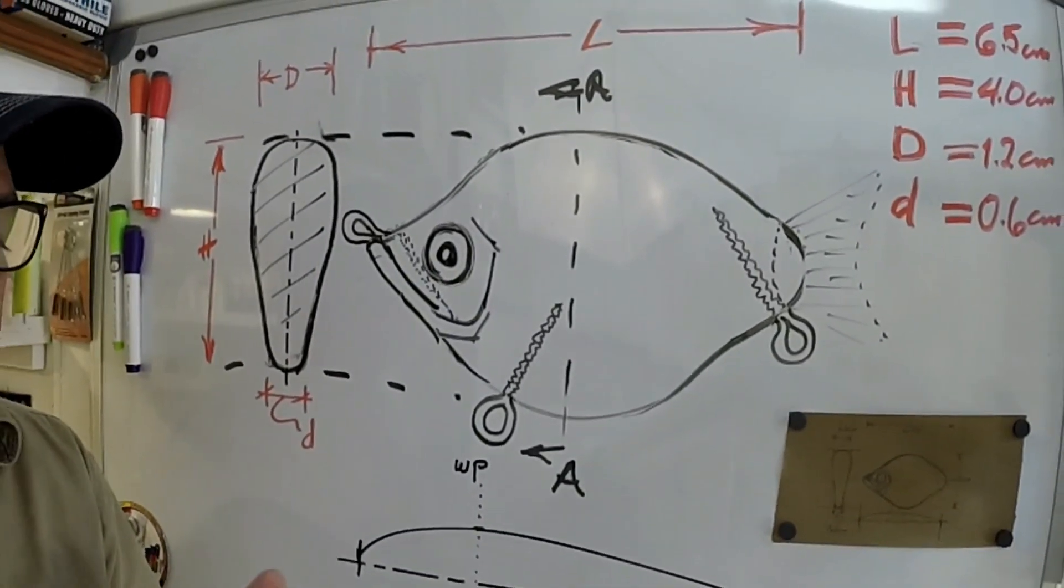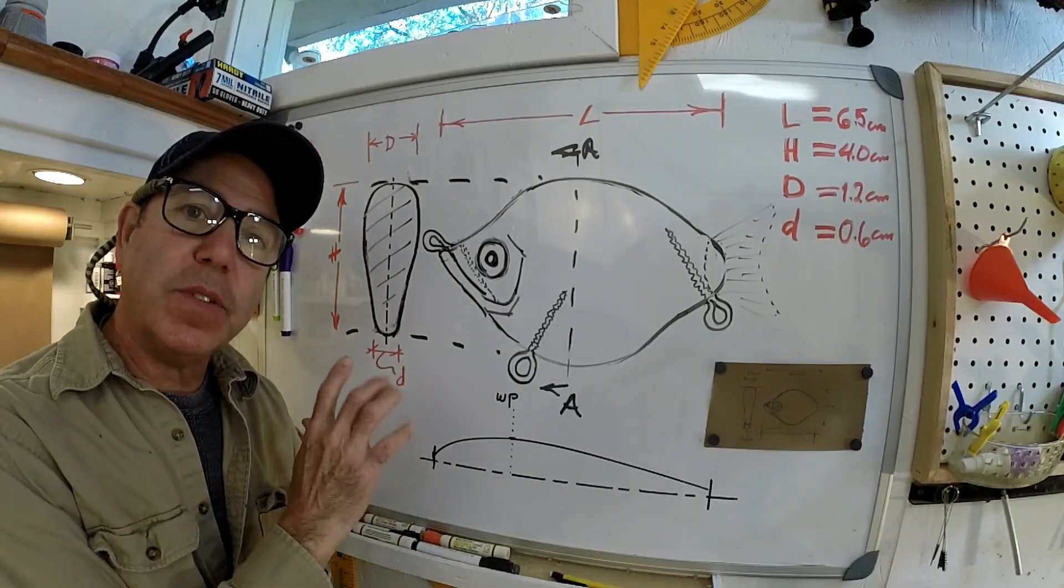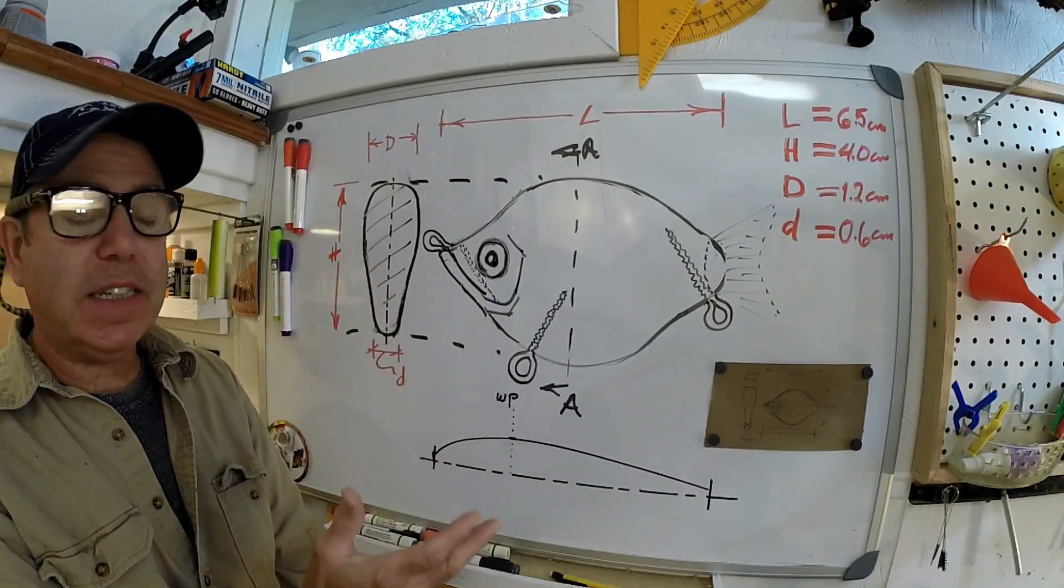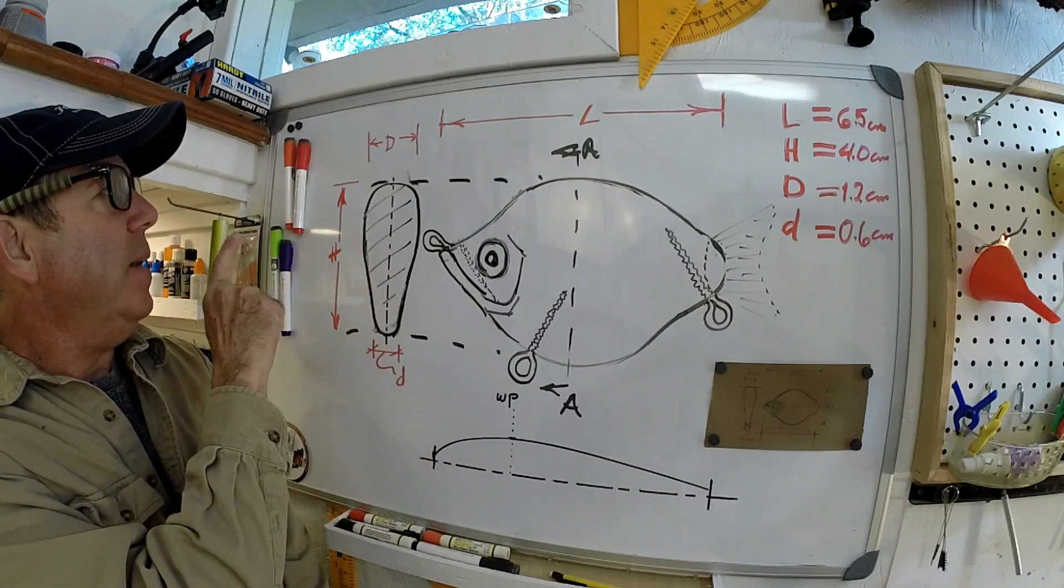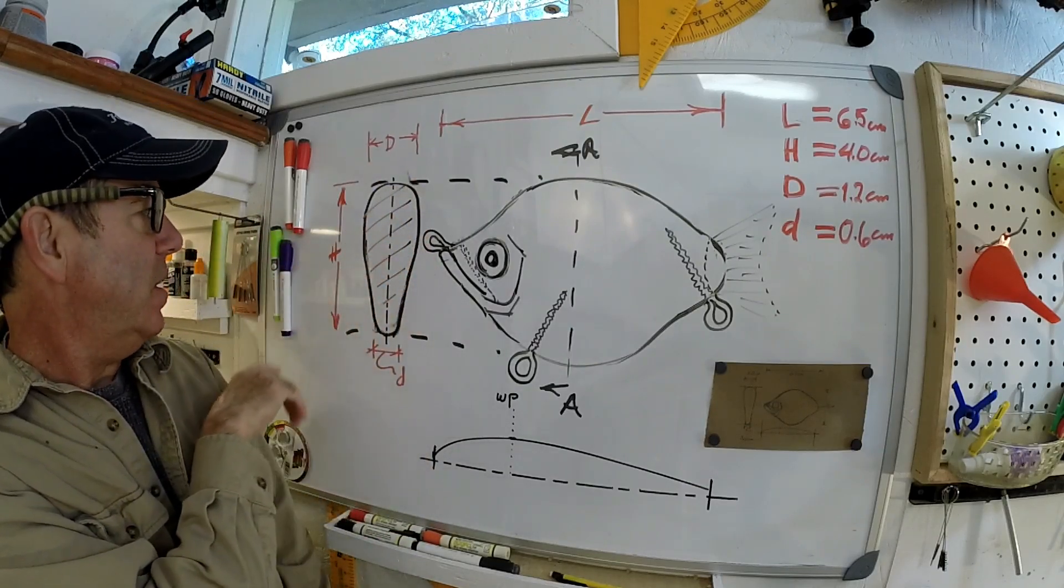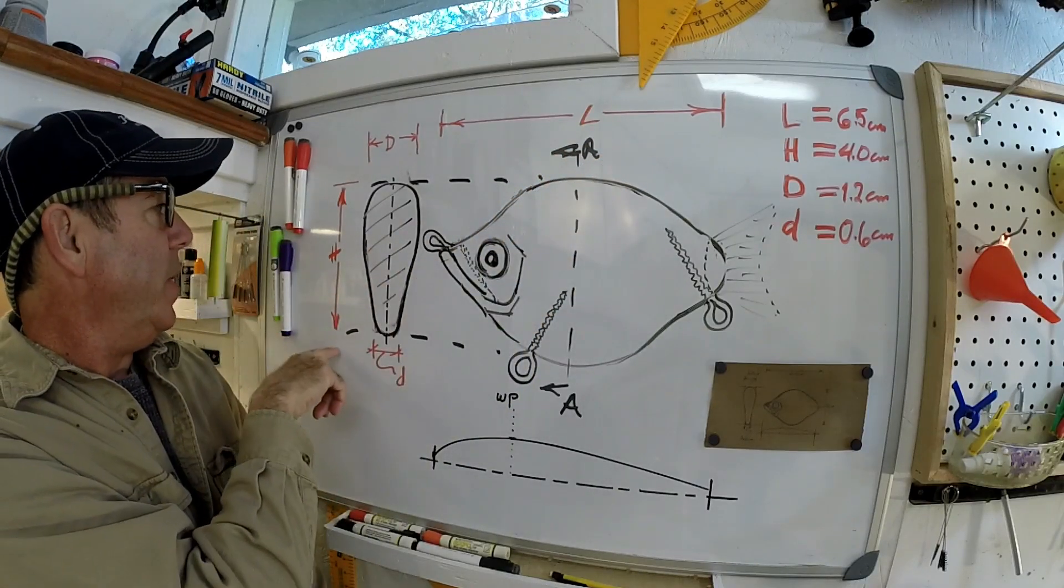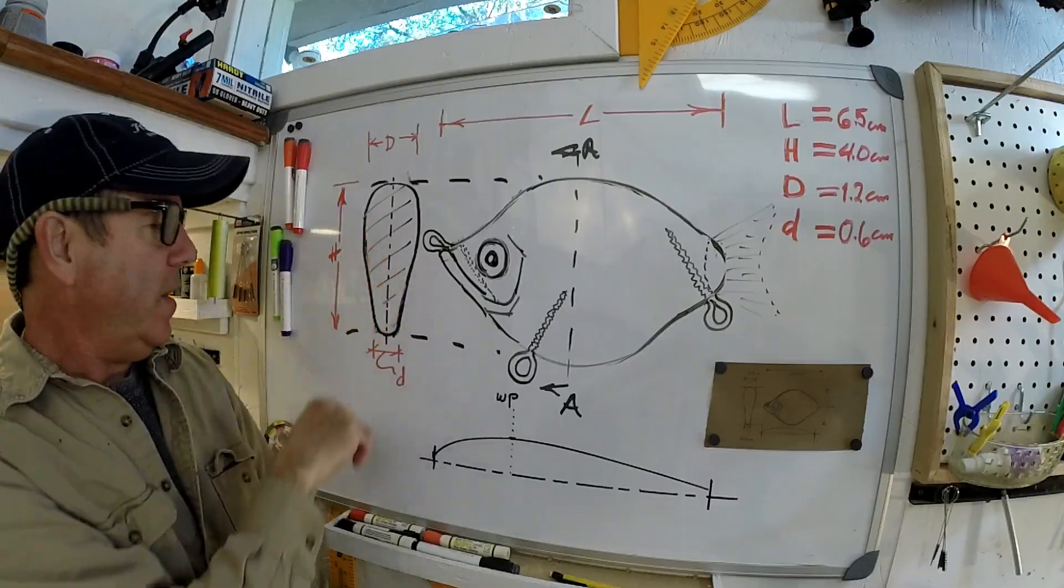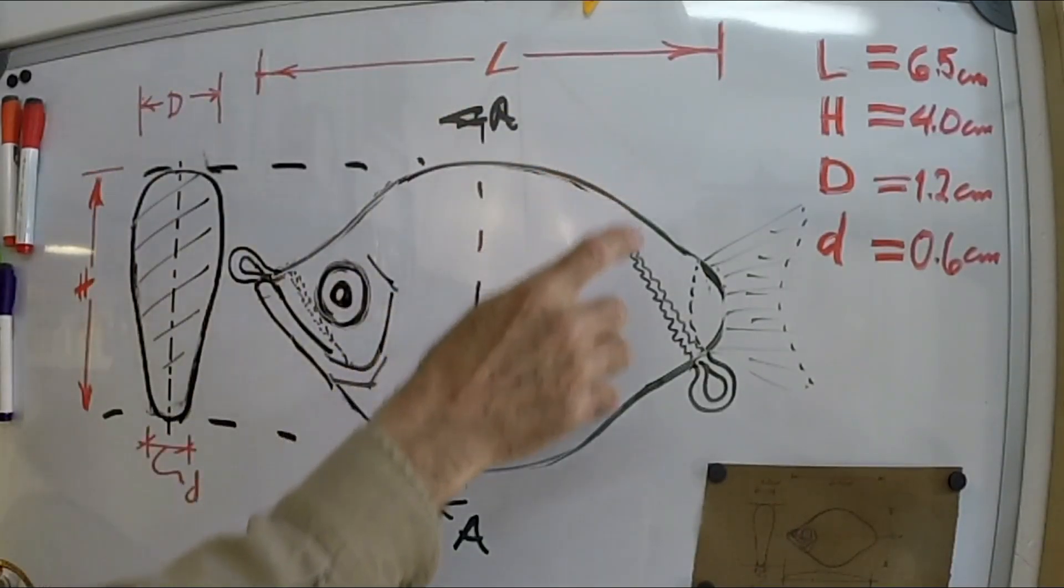Welcome back to the engineered angler. We're back still doing the lure design from scratch. This is the sketch that you remember from the last video. I've refined it a little bit and added dimensions. The dimensions are over here on the right: big H is the full height, big D is the full width, L is the full length.